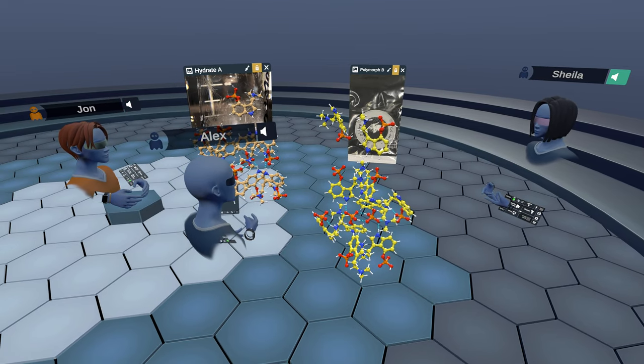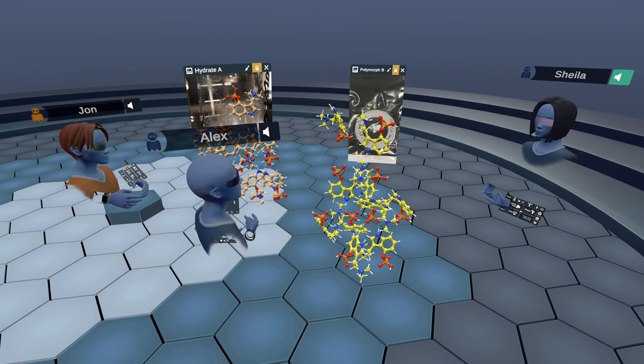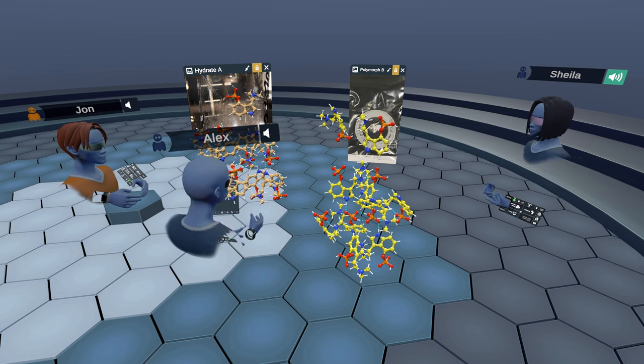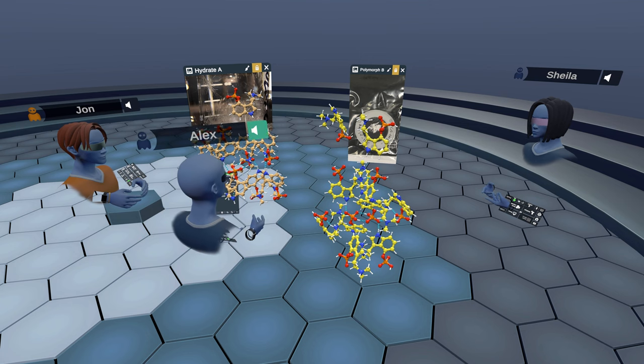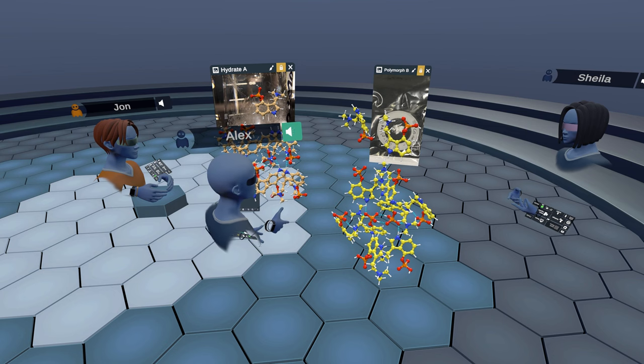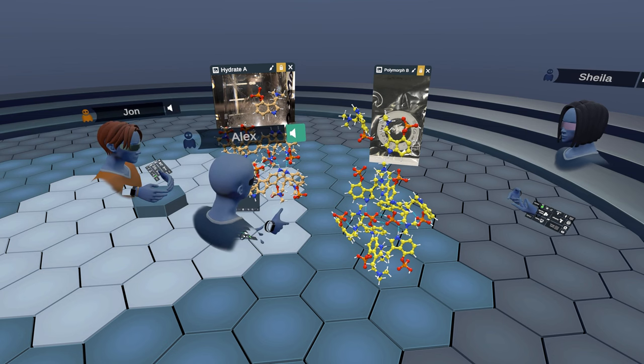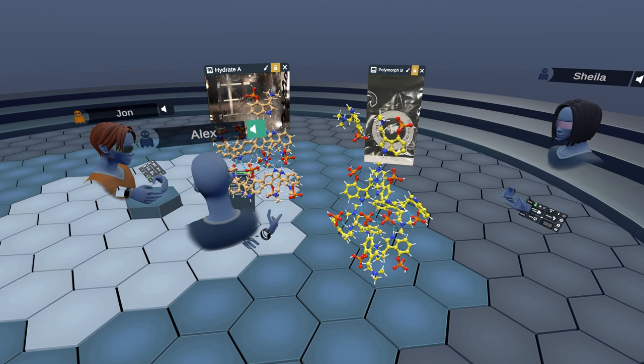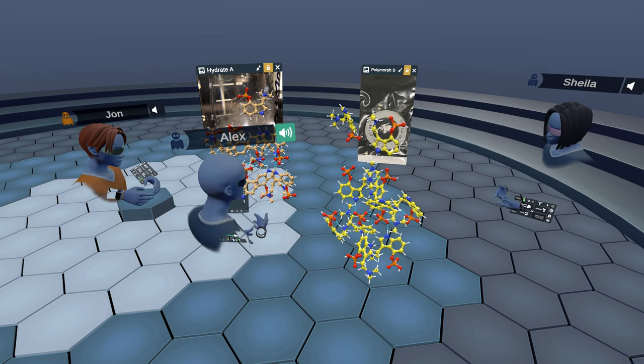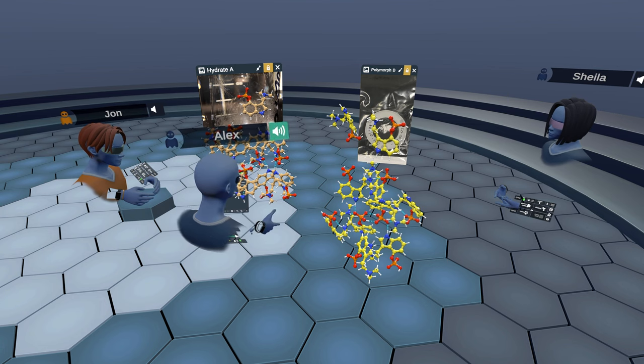I guess it would also be some sort of indication if you did come across a new polymorph, if the math couldn't fit the diffraction pattern. Yeah. Absolutely. So there are probably about a dozen known polymorphs for psilocybin. Most of them are actually solvates. So in the same way that the hydrated form coordinates with water molecules, most of the polymorphs for psilocybin are solvates.